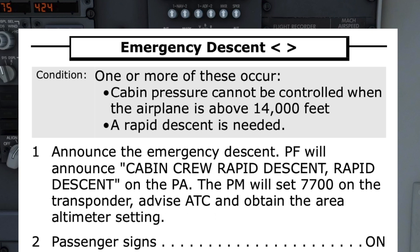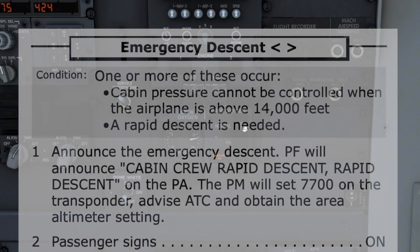A PA is then made by the pilot flying: "Cabin crew, rapid descent, rapid descent." The pilot monitoring sets 7700 on the transponder, advises ATC of the descent, and obtains the area altimeter setting.